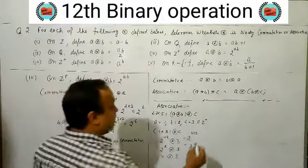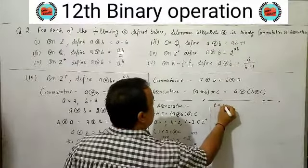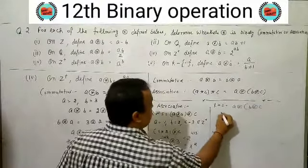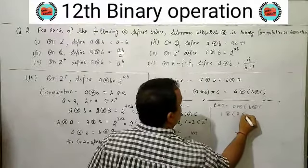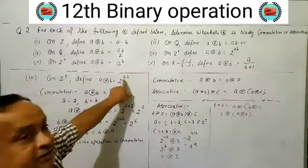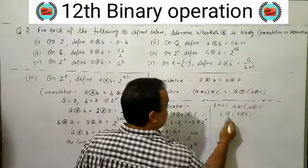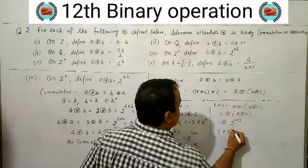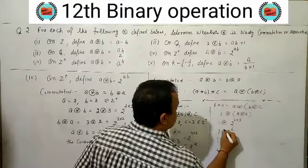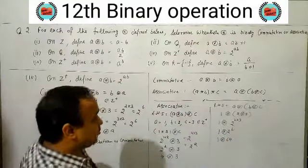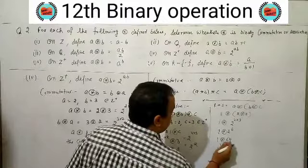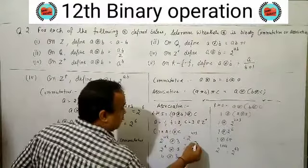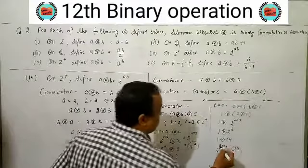Left hand side = 2^12. Right hand side: A★(B★C) = 1★(2★3). First: 2★3 = 2^(2×3) = 2^6 = 64. Then 1★64 = 2^(1×64) = 2^64. So left side = 2^12 and right side = 2^64.